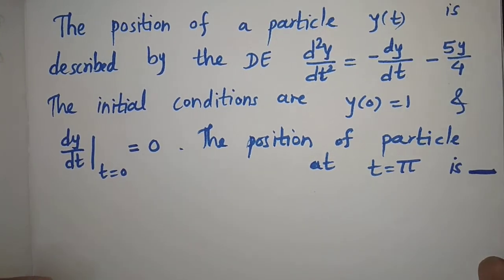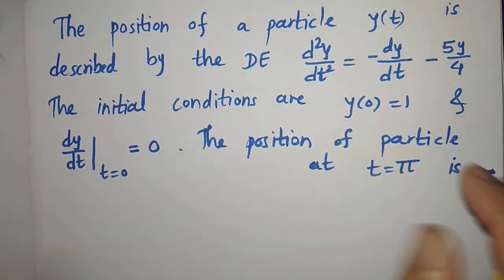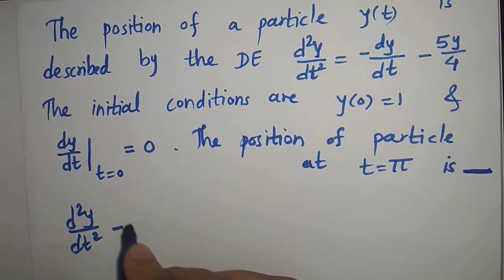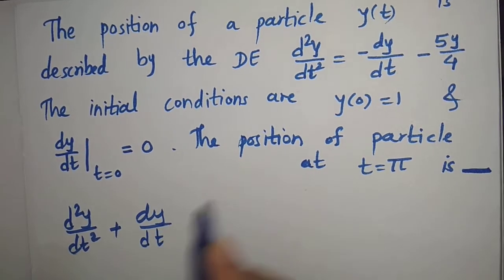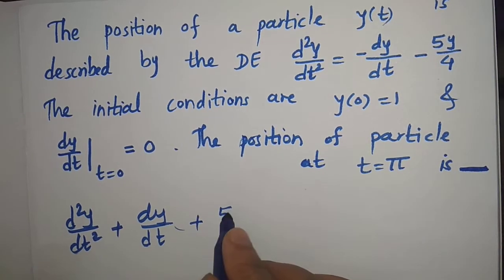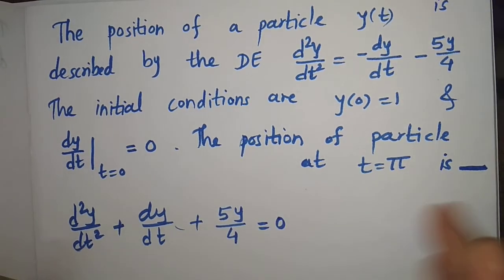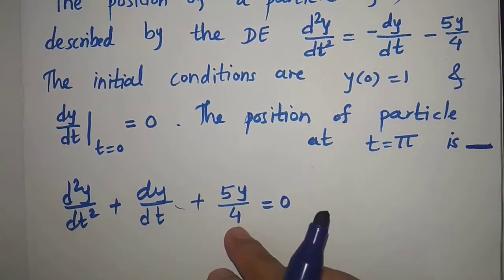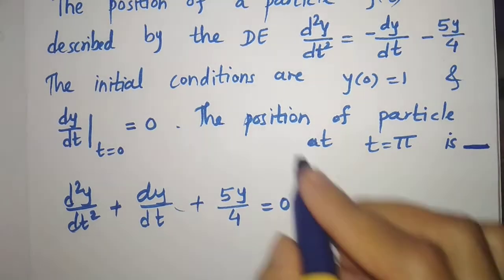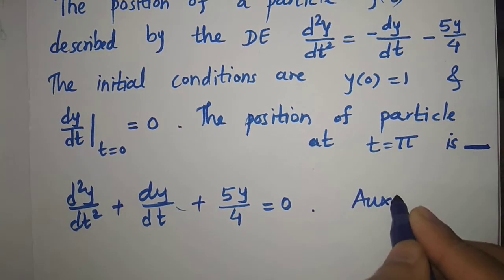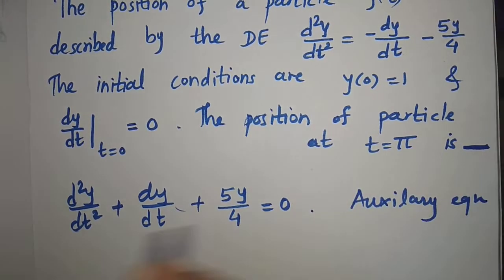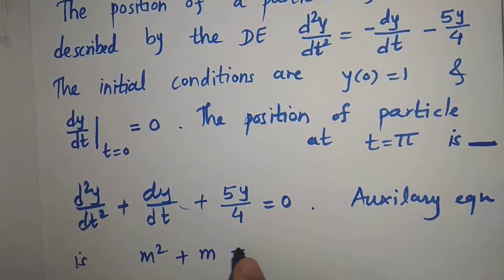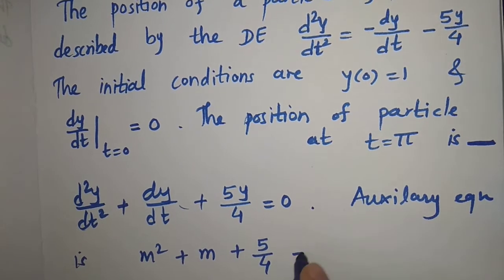The equation is d²y/dt² equal to minus dy/dt minus 5y/4. Write it in standard form: d²y/dt² plus dy/dt plus 5y/4 equal to 0. This is a second order ordinary differential equation, so find out the auxiliary equation: m² plus m plus 5/4 equal to 0.